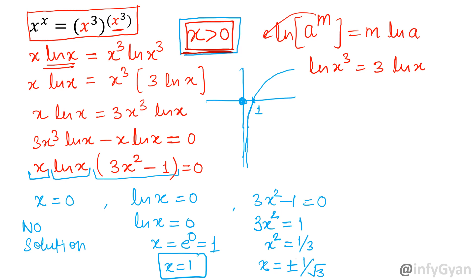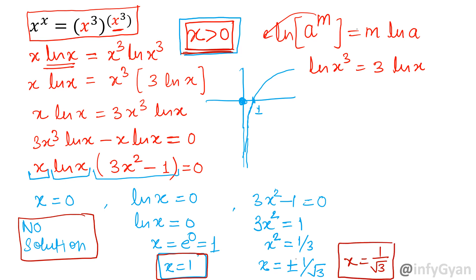Since it is already clear that x cannot be negative or zero, x equals minus 1 over root 3 is not acceptable. So the outcomes are: x = 0 (rejected, undefined), x = 1 (valid), and x = 1 over root 3 (valid). These are the two solutions we get. Let's now look at the graph part.